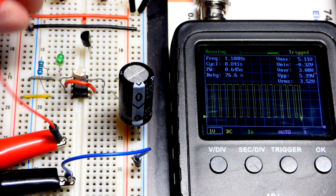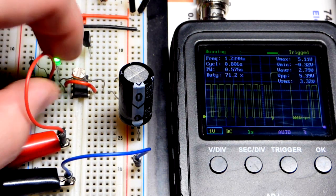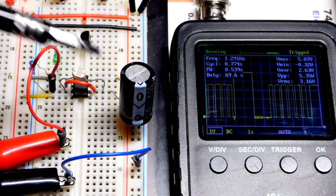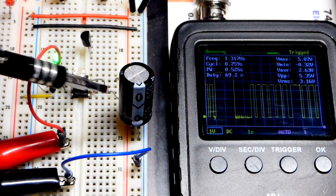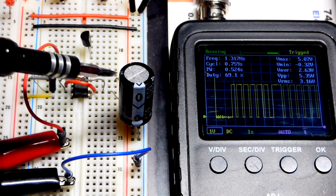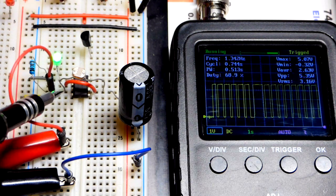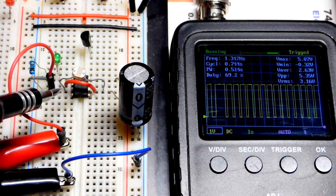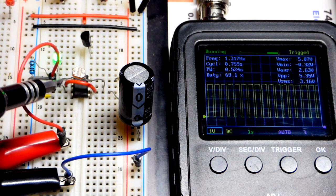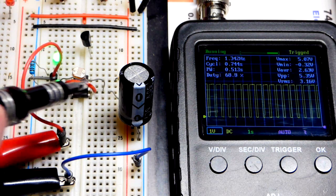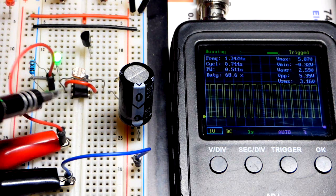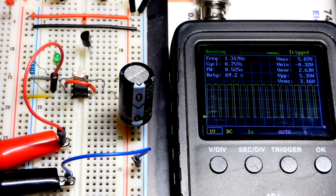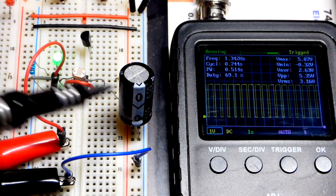And so the capacitor is not going to charge up to two-thirds of the power supply voltage as quickly because it's not 5 volts. We have 5 volts at the rail, but only about 3.5 at the light-dependent resistor. So less voltage, less current, even though the resistance stays the same as long as the light level stays the same.